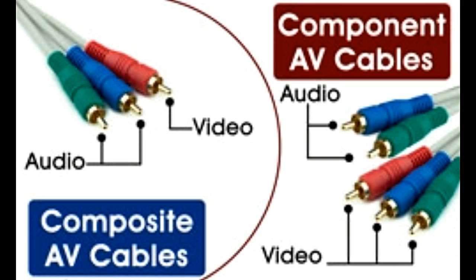Composite video technology was developed back in the 1950s, when the addition of color to black and white TVs had just begun. Back then, the color information for the video was multiplexed with the monochrome signals and transmitted along the same TV channel.